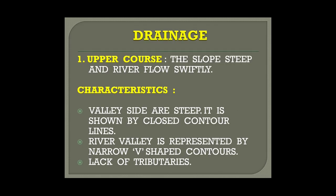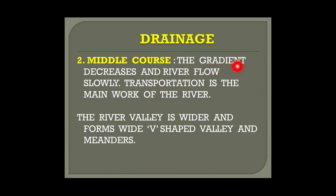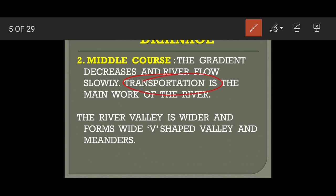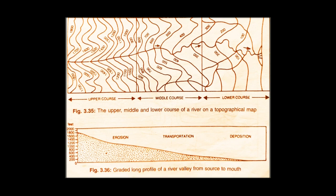In the middle course the gradient decreases and the river flows slowly. The gradient is the ratio between the vertical increase in height and the horizontal equivalent. Transportation is the main work here. The river valley is much wider than the first stage, occupying a wider V-shape. You can see the contours have moved apart because the slope is not as steep, and the height has reduced. The river has started forming meanders.